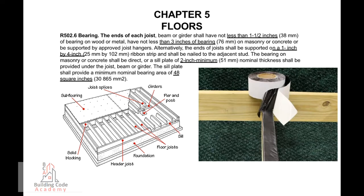Alternatively, the ends of joists shall be supported on a 1-inch by 4-inch (25mm by 102mm) ribbon strip and shall be nailed to the adjacent stud. The bearing on masonry or concrete shall be direct, or a sill plate of 2-inch minimum (51mm) nominal thickness shall be provided under the joist, beam, or girder. The sill plate shall provide a minimum nominal bearing area of 48 square inches (30,865 square millimeters).